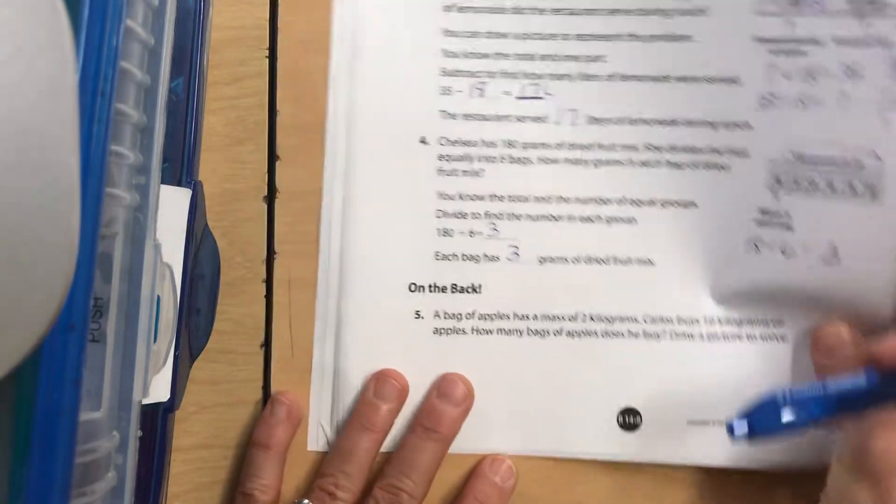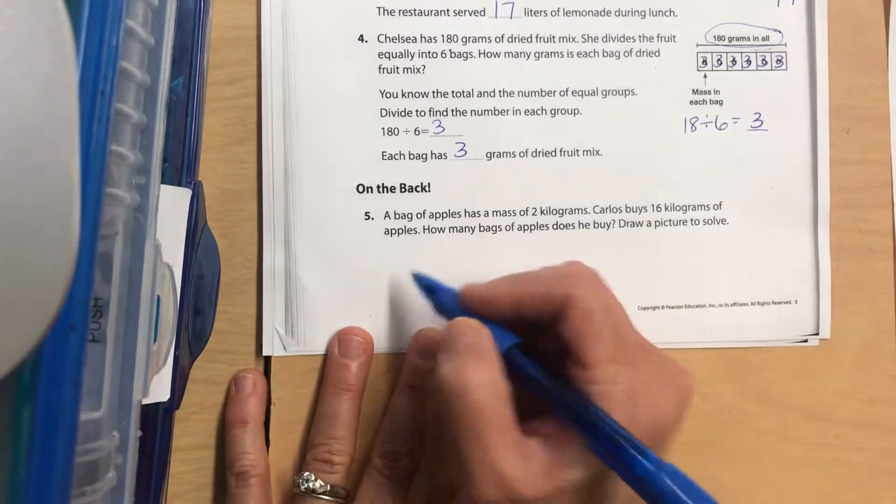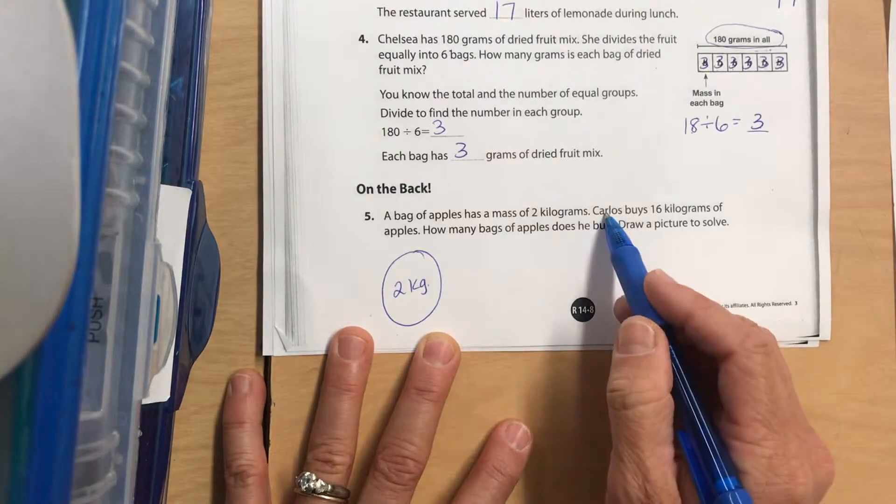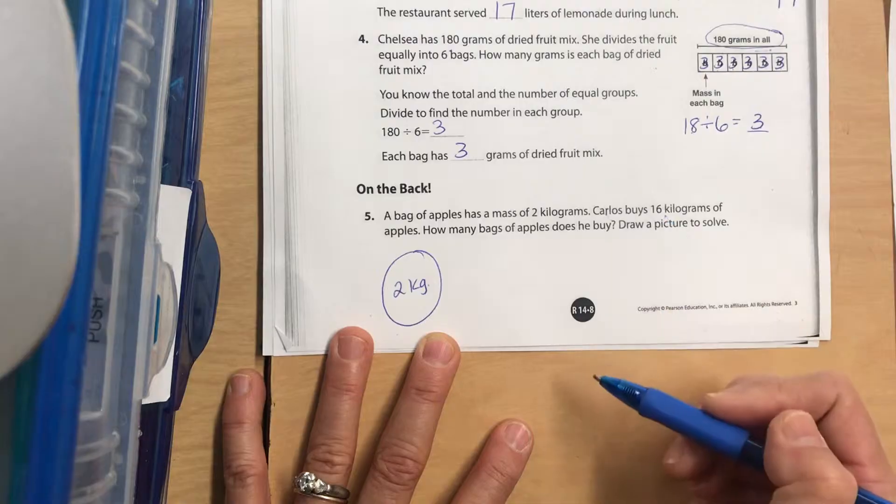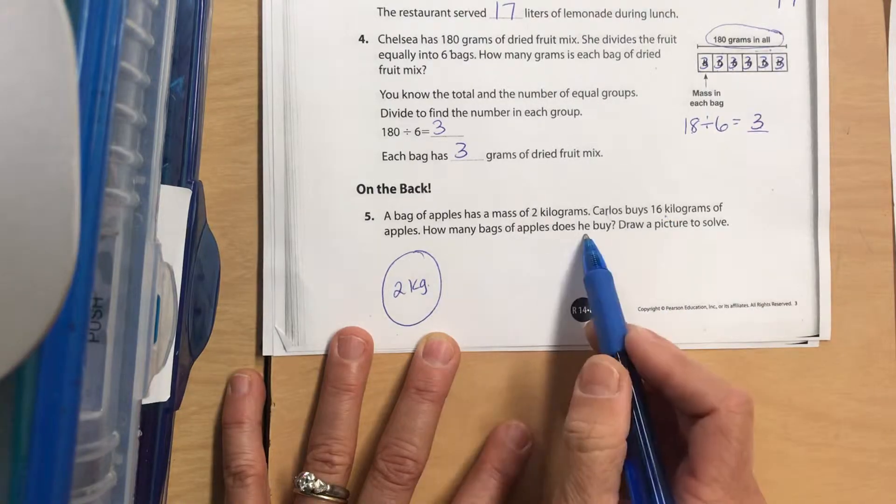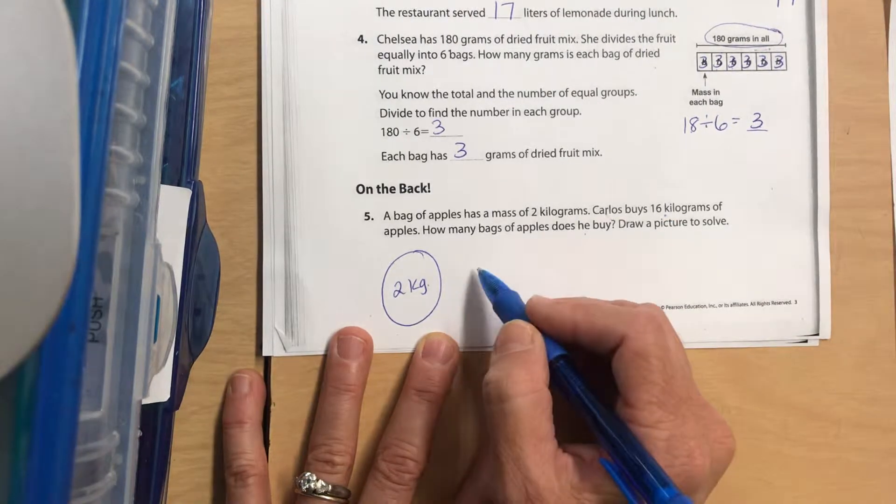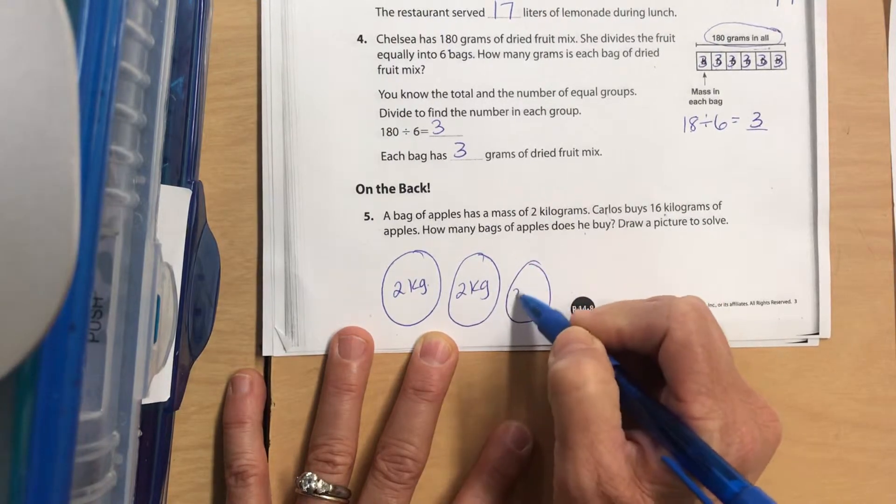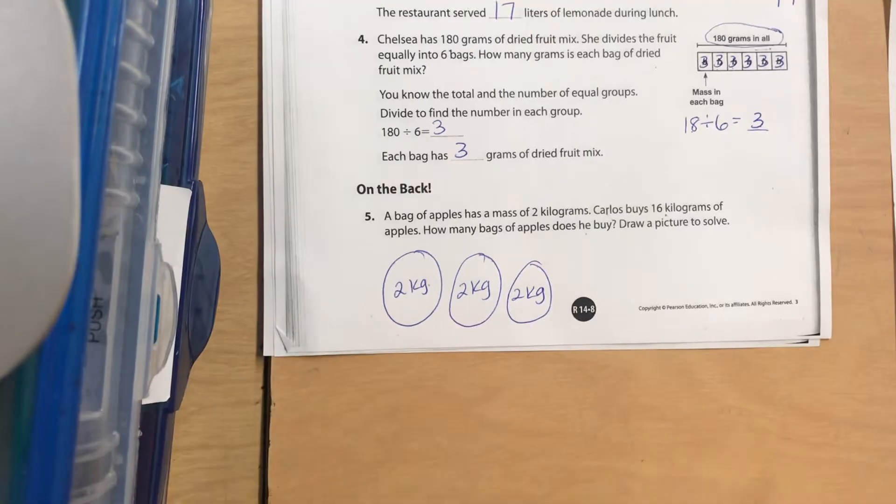All right, a bag of apples has a mass of two kilograms. Carlos buys a total of 16 kilograms. How many bags of apples does he buy? Well, we can just draw each bag until we get to 16 kilograms. So figure out how many bags.